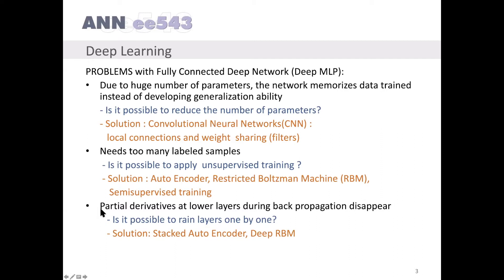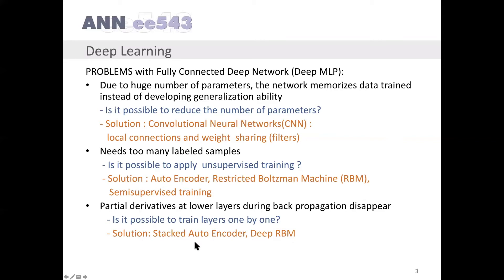Another problem is that partial derivatives at lower layers during backpropagation disappear. The question is: is it possible to train layers one by one? The solution is stacked autoencoder and deep restricted Boltzmann machine. They are trained layer by layer.